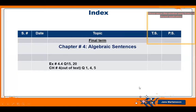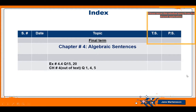So today's index is exercise 4.4 questions 15 and 20, which is on page number 75, and then chapter number four out-of-text questions, question 1, 4 and 5. Note down this index quickly.